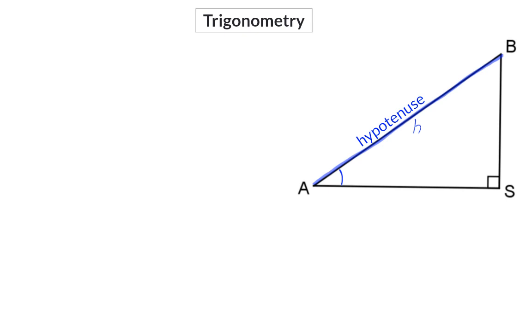In Trigonometry, we often make use of the Greek alphabet to name angles. So let's call the angle at A, theta. If we now focus on side AS, the side that is touching angle theta, this will be called the adjacent side.